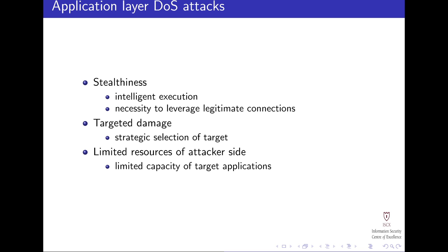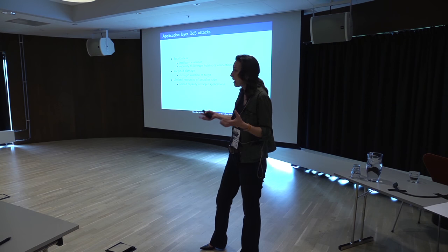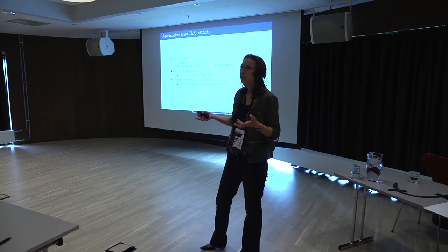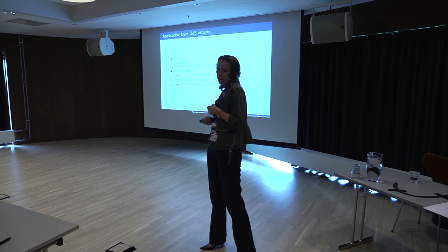There are three very unique characteristics that specify what an application layer attack is. First is stealthiness, mostly due to intelligent execution and the fact that they leverage legitimate connections. These attacks also have very targeted damage, focusing on very specific targets, whether it's a particular feature in the protocol or a particular service. And finally, the amount of resources required on the attacker side is very limited. It's very economical.